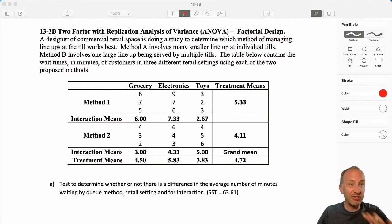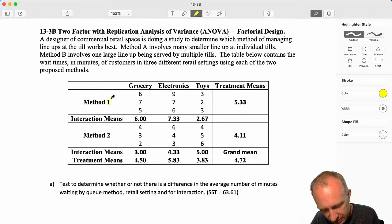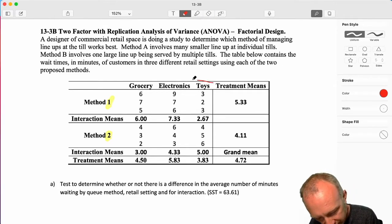So we've already gone through one factorial, I talked a whole bunch, it was a long video, so this one I'll try to keep it a little bit shorter and we'll stick to the problem and maybe I'll talk about a few things as they come up. A designer of commercial retail space is doing a study to determine which method of managing lineups at the till works best. So here's our two factors.